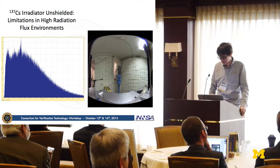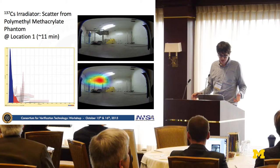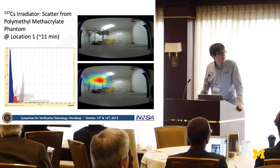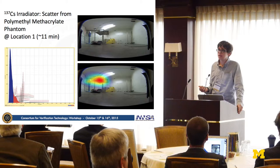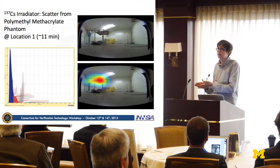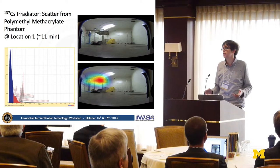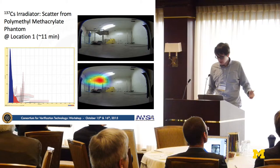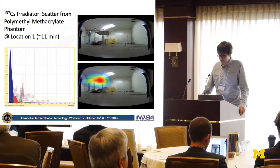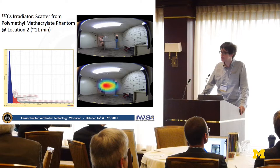The most interesting thing we did was getting it to image scatter — I think they have code for this now, but we did it before they did. The method we used was based on how the device images all counts under a peak, so I placed a peak every 5 keV in the scatter window we wanted to image. We pointed it at a polymethyl acrylate phantom placed in the broad beam of the cesium source. As you can see, there is a distinct image on the phantom of where the scatter is coming from — from another angle, you can see it even more clearly.